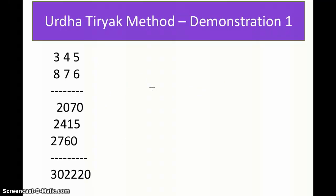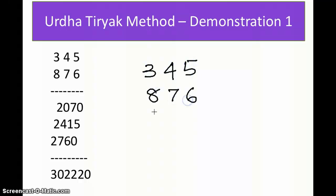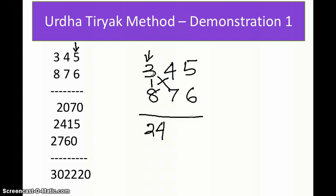So here we have numbers 345 and 876. Let's check out how to do this in a Vedic mathematics way by applying Urdha-Tiryak. We start multiplication from the left side. 3 × 8 is 24. The next step: 3 × 7 is 21, plus 8 × 4 is 32, giving 21 + 32 = 53. Write it in this pattern.